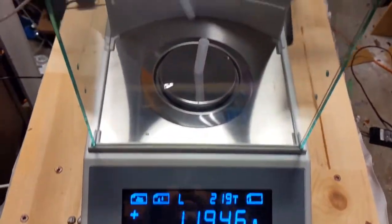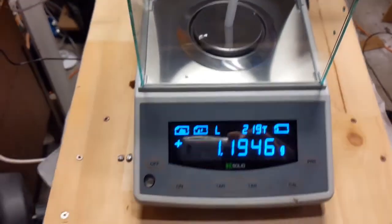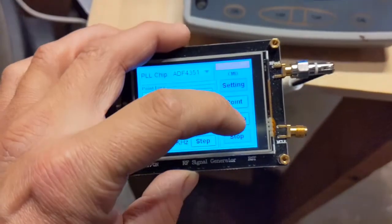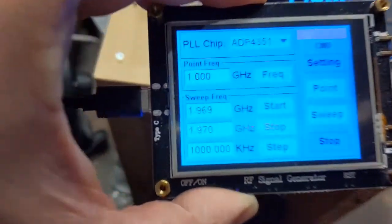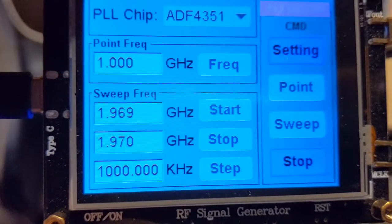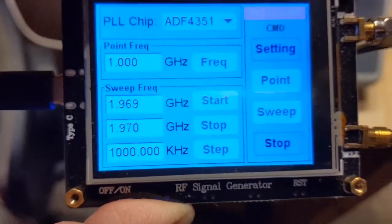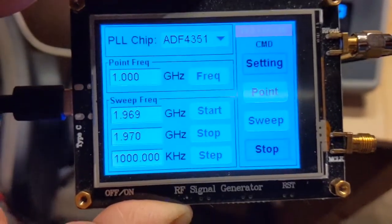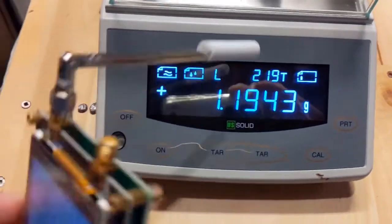A little piece of plastic weighs 1.1946 grams. I'm just going to turn this on. I have it set to sweep between 1.969 and 1.97 gigahertz for these DNP tests. I'm just going to move this around here.